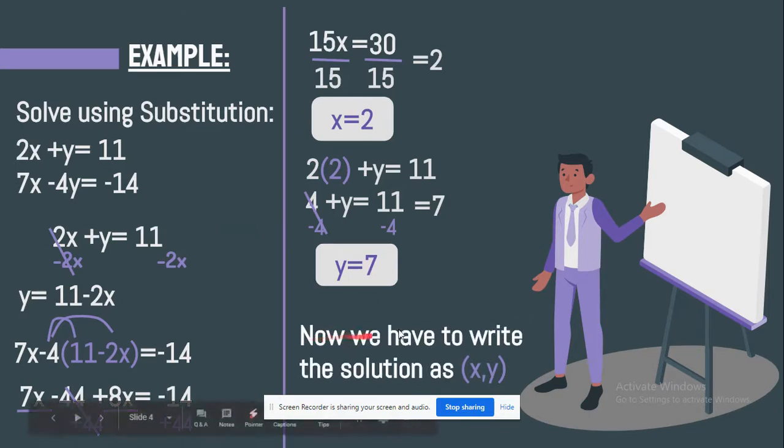So last thing we have to do is to write the solution as opening bracket x and y closing bracket. This is extremely important. You need to write your solution like this. So we now know the value of y and x. So this solution is 2 and 7.